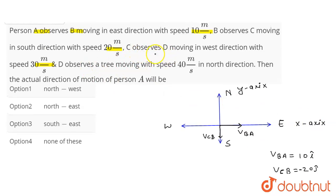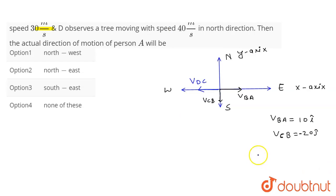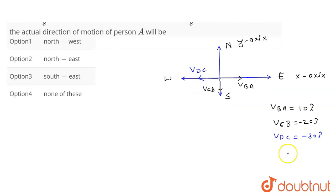C observes D moving in the west direction with 30 meters per second. So the velocity of D with respect to C is equal to −30î.